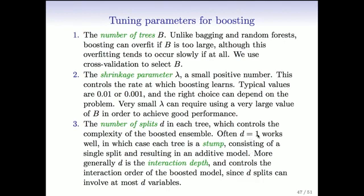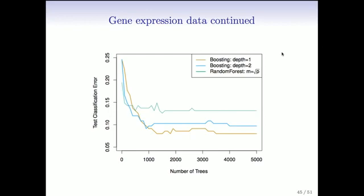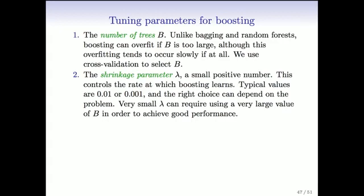If D is one, each little tree can only involve a single variable — it's actually an additive function of single variables, so no interactions are allowed. If D equals two, it can involve at most two variables, so that's pairwise interactions. The number of trees is also a tuning parameter. Unlike in random forests where the number of trees just needed to be large enough, in boosting it's possible to overfit, but it takes a very large number to typically start causing overfitting. Here we see we're up to 5,000 trees and not much is really happening yet in terms of overfitting. With classification problems it often just levels out.